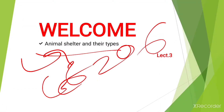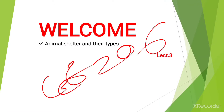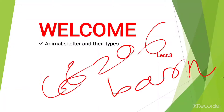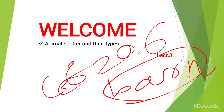Hello everyone. I am Assistant Professor Yasvi Shedai from the Agricultural Engineering Department. This is the third lecture of G206 and it includes animal shelter and their types. In this topic, we are going to learn about different animal shelters, but specifically only for dairy animals like cows and buffaloes. There are different types of barn — a barn being the large structure where animals are housed.